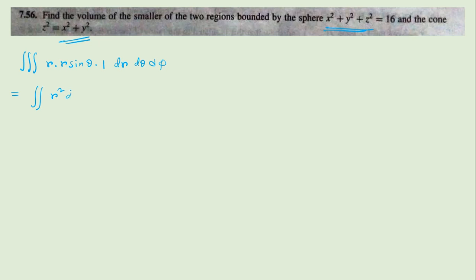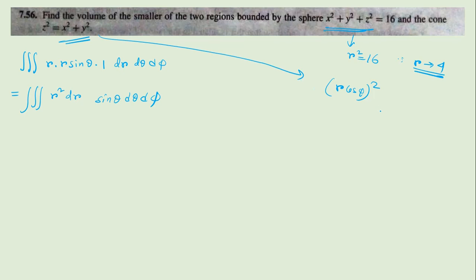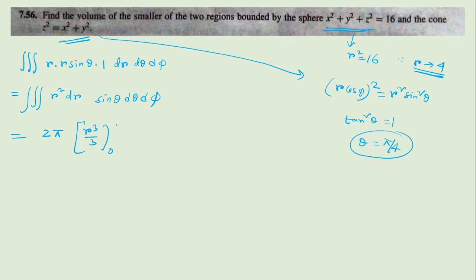The volume element is R² dR sin θ dθ dφ. Putting in the values: R² = 16, so R goes up to 4. For the cone equation, z² = x²+y², where z = R cos θ and x²+y² = R² sin²θ, so R² cos²θ = R² sin²θ, giving tan²θ = 1, so θ = π/4. The limits are: φ from 0 to 2π, R from 0 to 4, and θ from 0 to π/4.